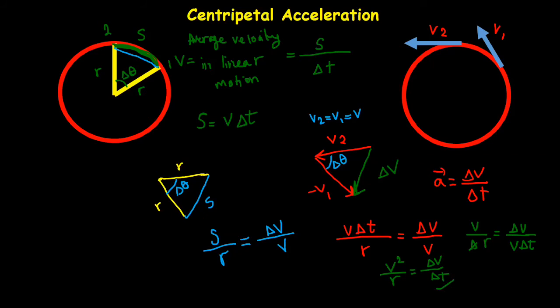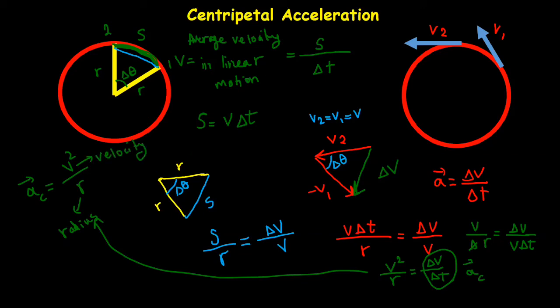And we know ΔV divided by ΔT is A. And we show this A with ac. That is centripetal acceleration. So we got a formula actually for centripetal acceleration that I rewrite it here again. So ac equals V²/R. That R is radius. V is velocity of the object that is constant in terms of magnitude.